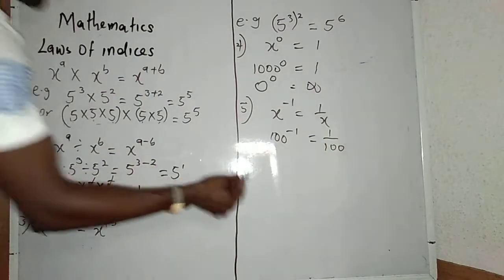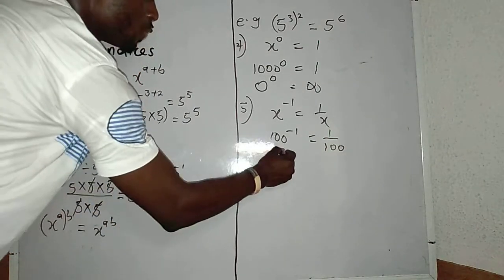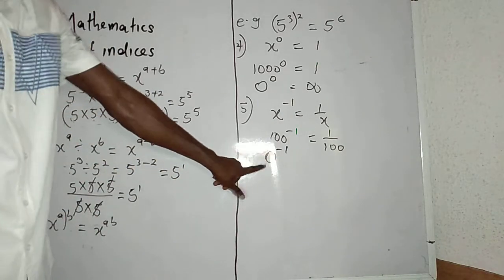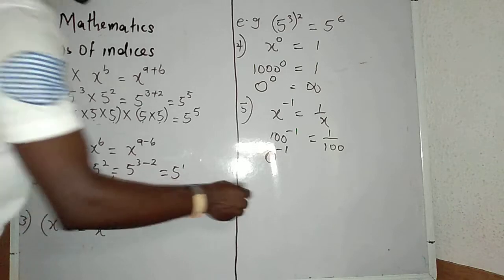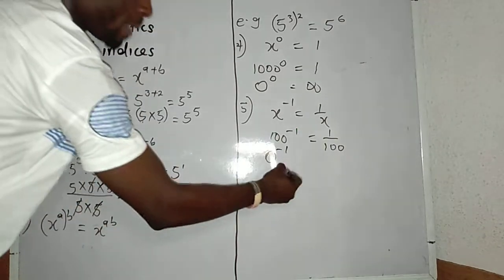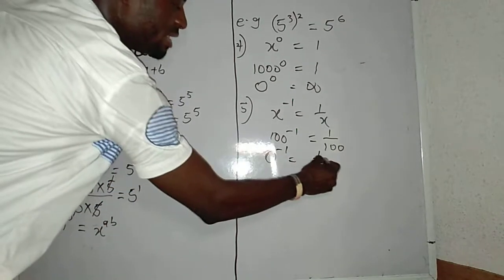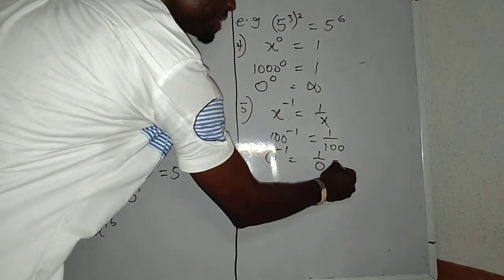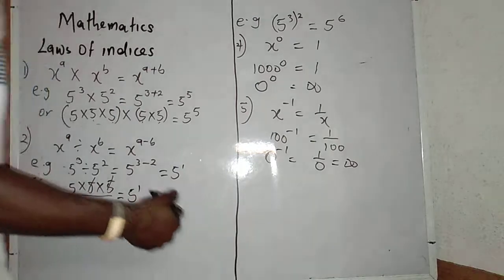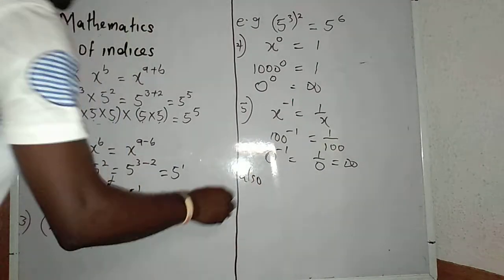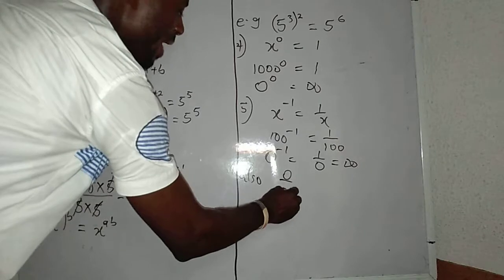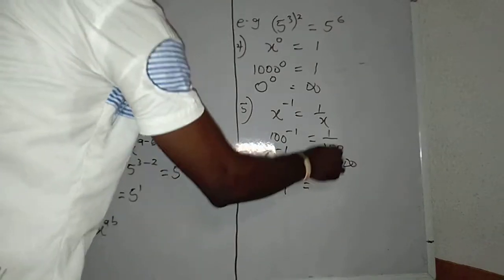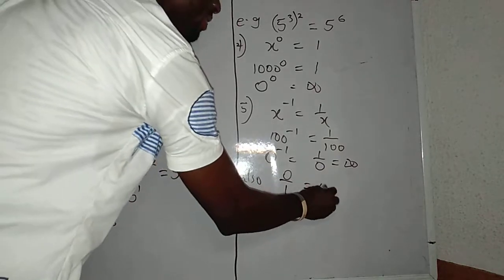Now, if I have 0 raised to power minus 1, I have to emphasize on this — 0 is a neutral number. This would give 1 divided by 0. A number divided by 0, my answer will be undefined. Also, if I have 0 divided by a number, my answer is 0.